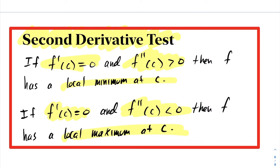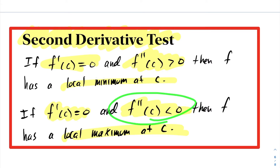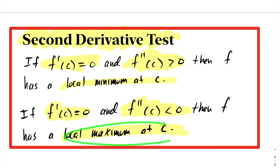This is just a result of our concavity test. f double prime at c being greater than zero means that the function is concave upwards, which means it has a local minimum. f double prime being less than zero means that the function is concave downwards and therefore hits a maximum at c.